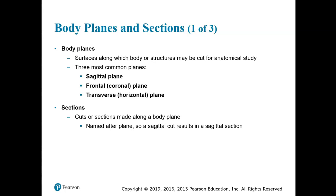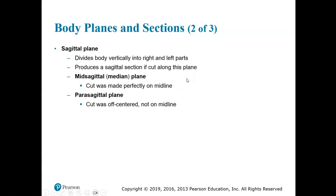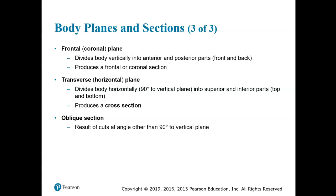As far as body planes and sections: a plane is a surface along which the body or body structures can be cut so that we can study them. A sagittal plane is a cut that divides the body into left and right portions. A frontal or coronal plane divides the body into front and back — anterior and posterior portions. A transverse plane divides the body into superior and inferior portions. A mid-sagittal plane, also known as a median plane, is perfectly on the midline and divides the body into equal left and right halves. Parasagittal is when it's not centered. An oblique section is at an angle. A transverse section is also known as a cross section.